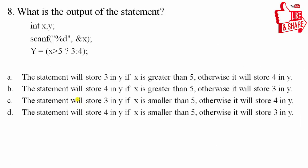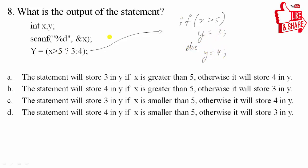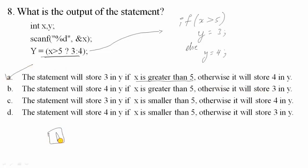Eighth question: what is the output of the following statement? The statement uses a ternary operator: if x > 5, assign y = 3, else assign y = 4. The statement stores 3 in y if x > 5 (true), otherwise stores 4 in y. The corresponding option is option A.